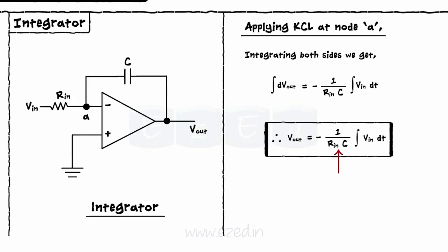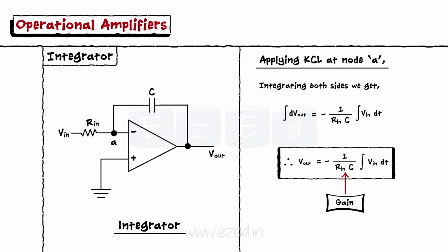If 1 upon Rin into C is the gain, then the output is an integration of an input. Thus, the name integrator.